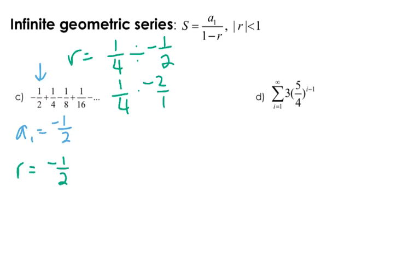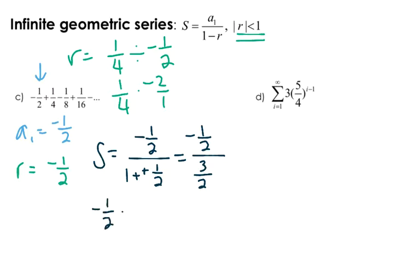Alright, so 1 half. Absolute value is 1 half, is less than 1, so we can do this problem. So the sum of this infinite series is a sub 1, which is negative 1 half, over 1 minus negative 1 half. Lots of 1 halves. So I've got a negative 1 half in the numerator. Remember, minus minus becomes a plus. So that's going to give me 3 halves. When you divide fractions, you multiply by the reciprocal. So negative 1 half times 2 thirds is going to give me a negative 1 third.